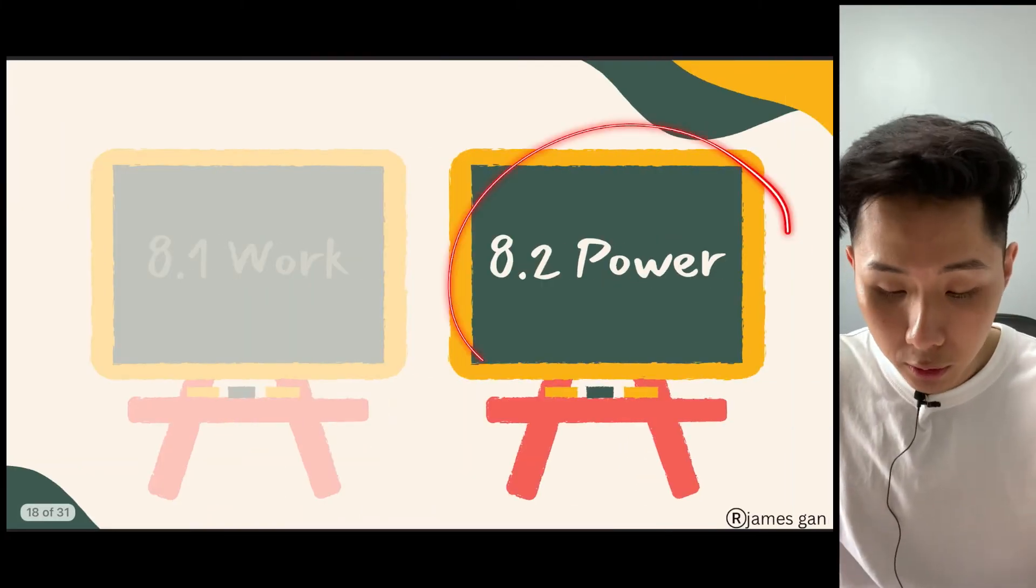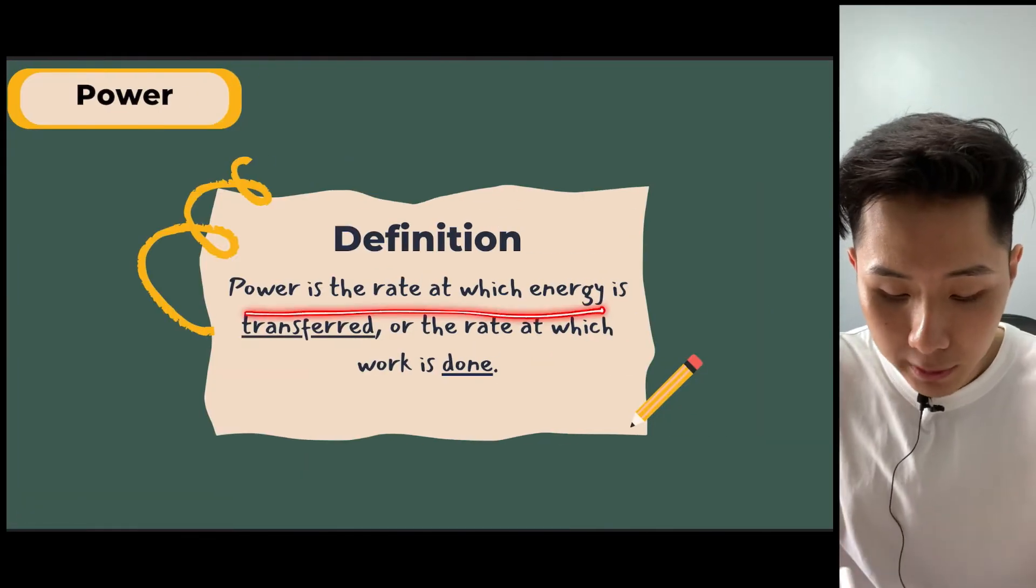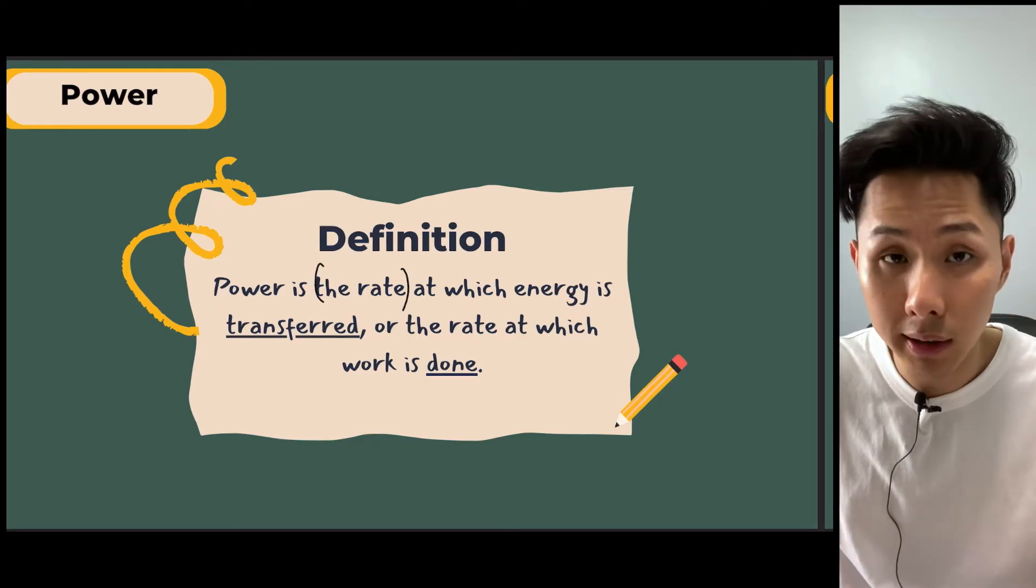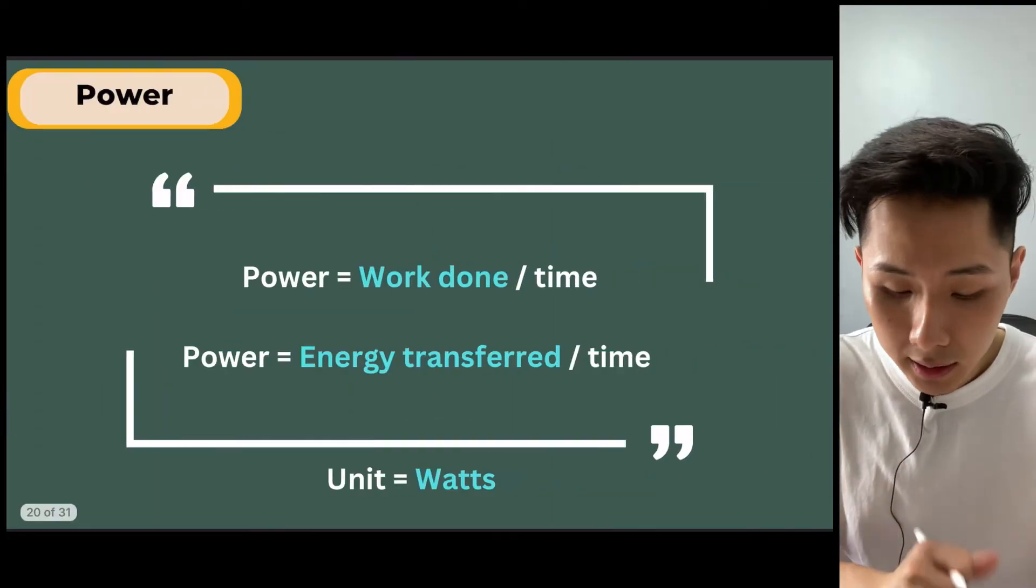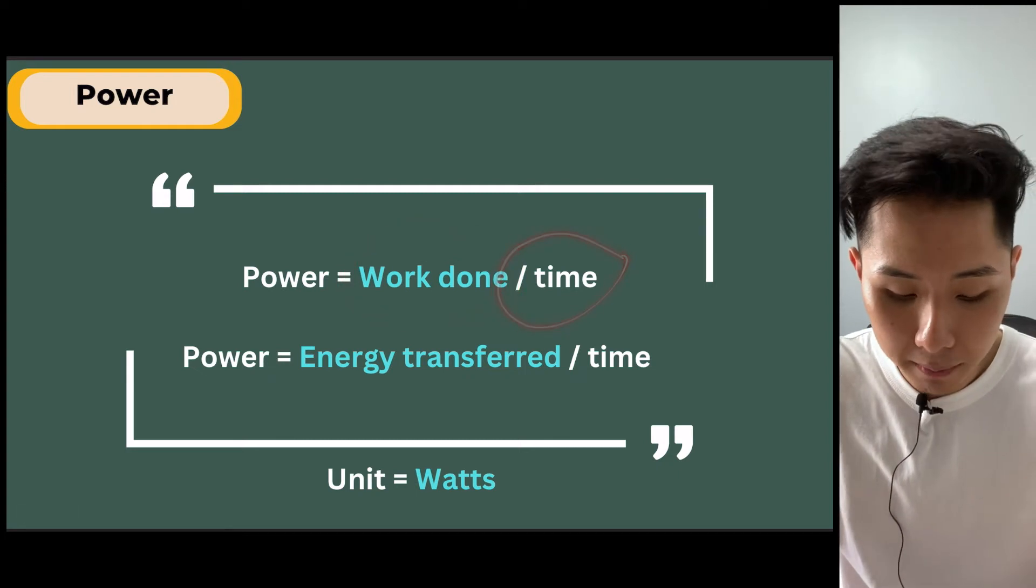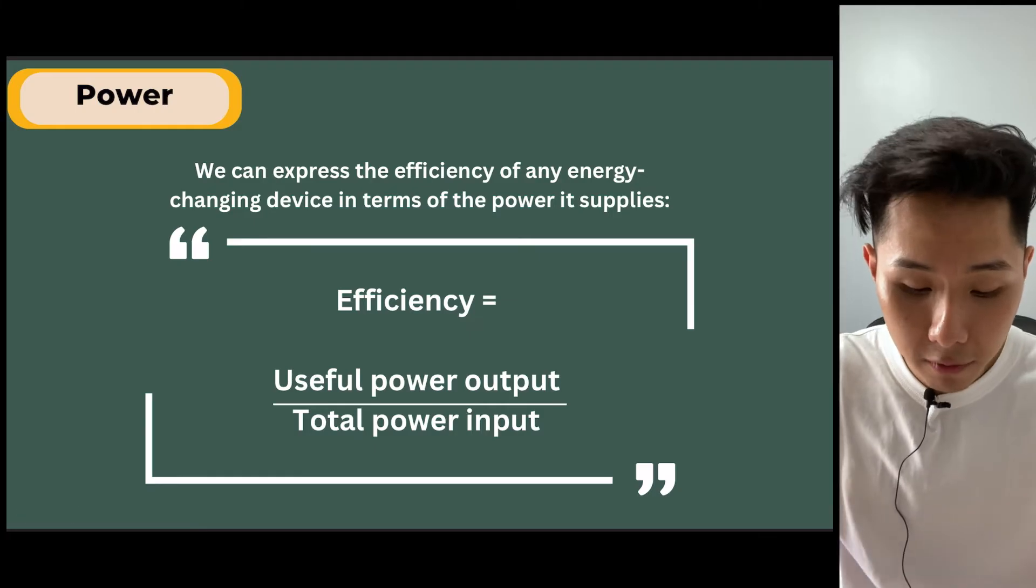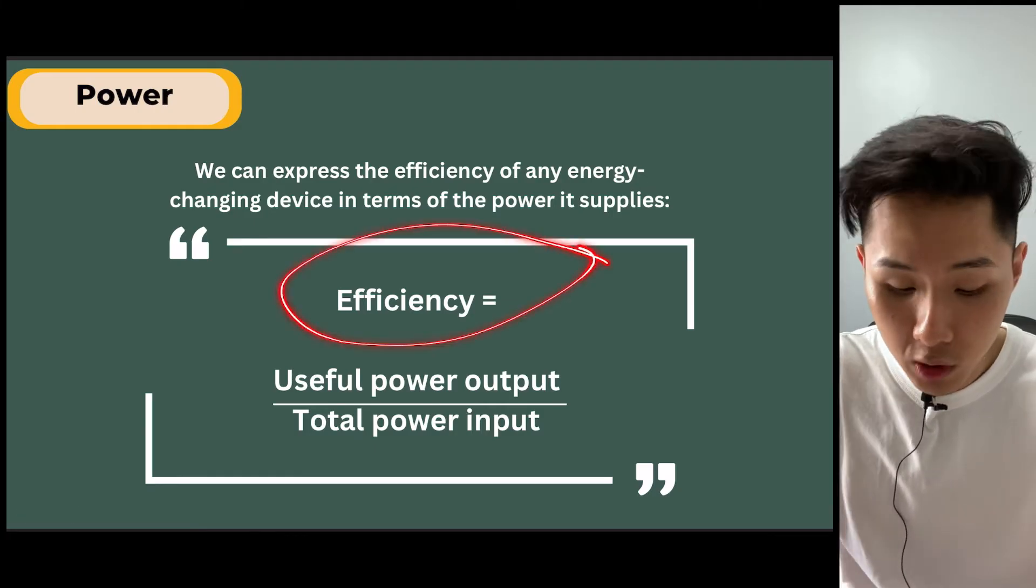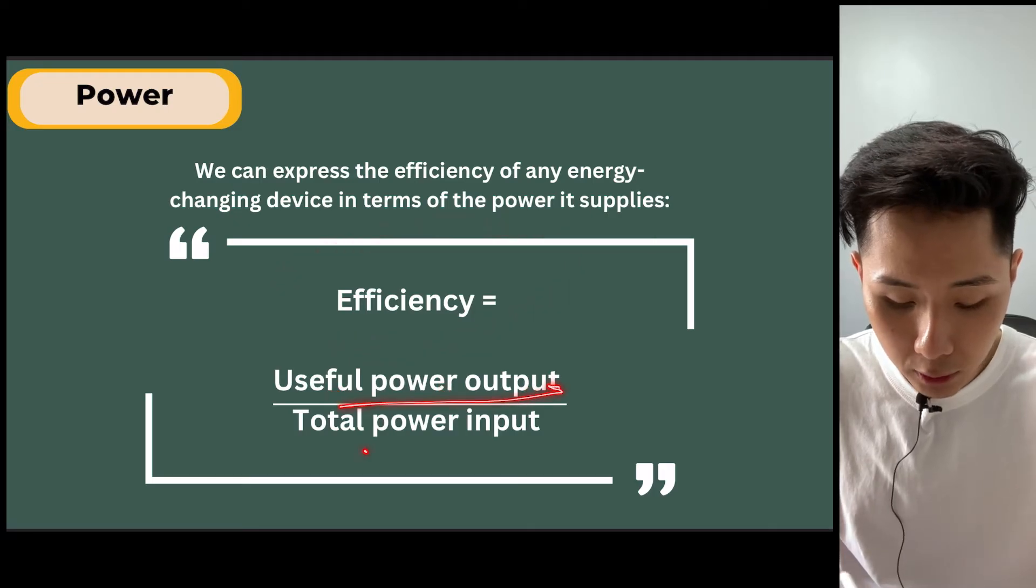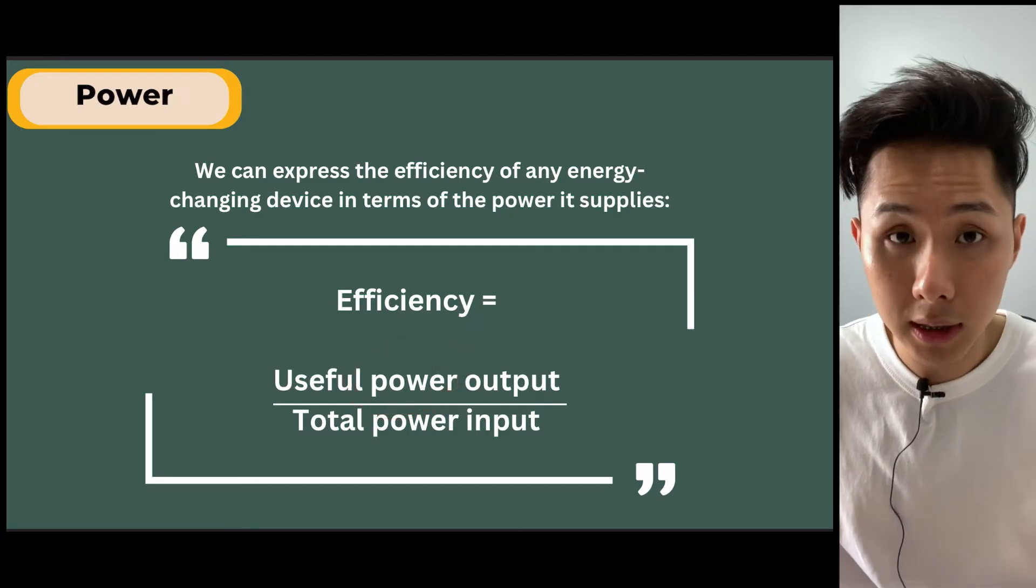So let's move on to power. Power is actually very similar to work done. Let's look into what it is. Power is the rate at which energy is transferred. The rate means how much energy is transferred in one second. So the formula for power is basically work done divided by time, usually in seconds. And the unit is watts. Another way, remember in chapter 7, we learned about the efficiency formulas. Useful power energy divided by total energy. So now, instead of using energy, we could also use power into our formulas.